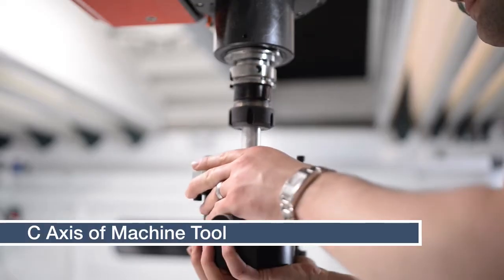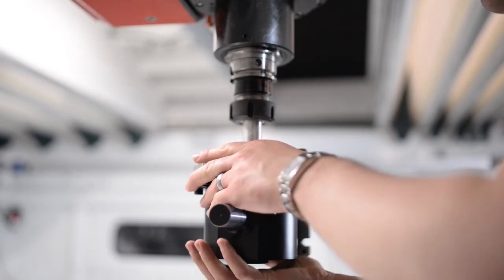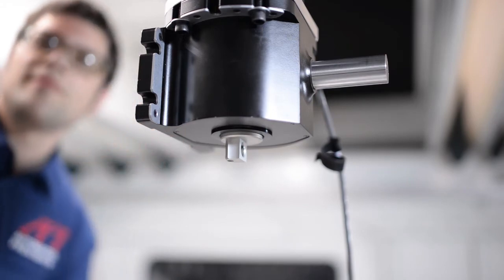For the C axis, mount it horizontally with an adapter. Remember to mount the magnetic mirror on the bottom of the swivel check.